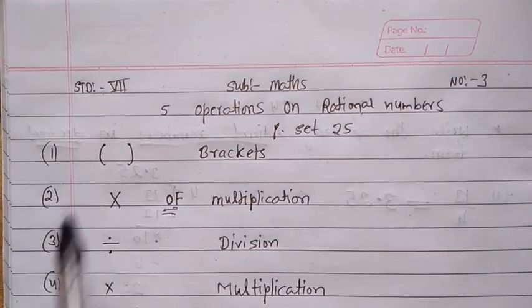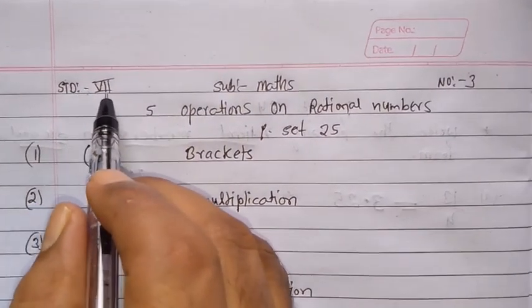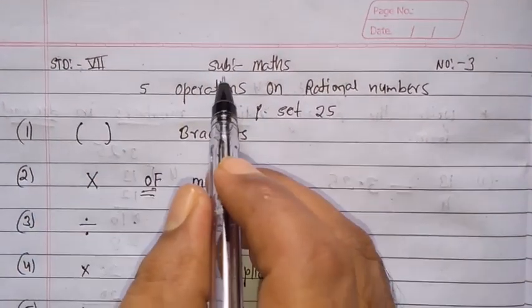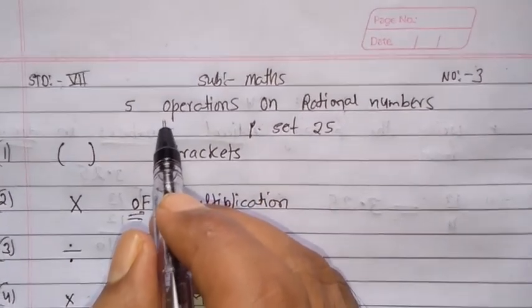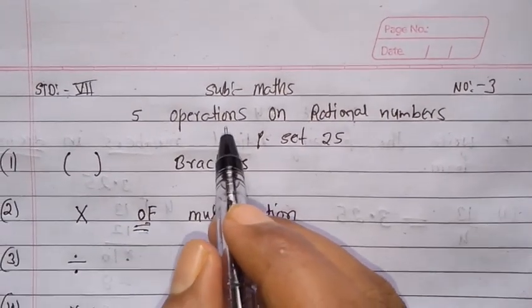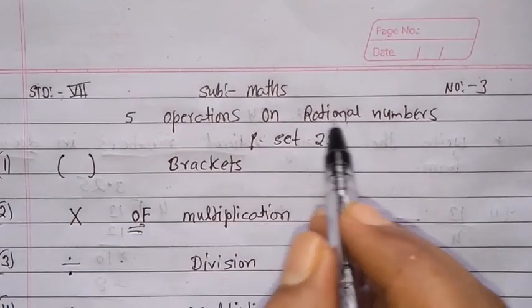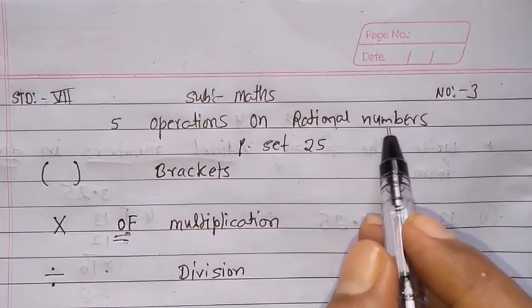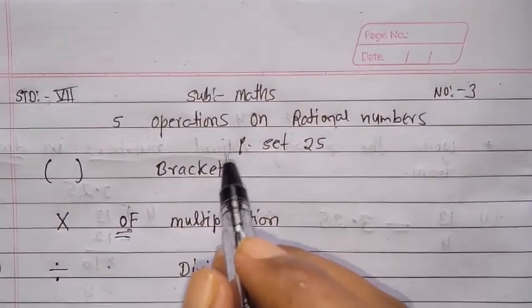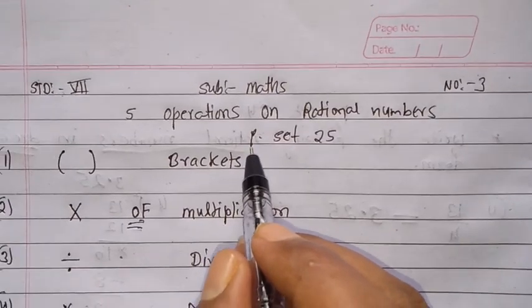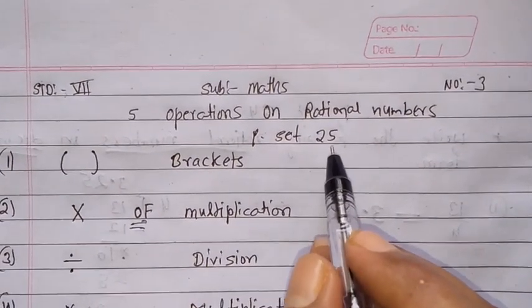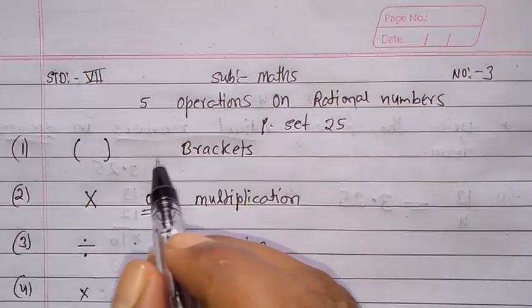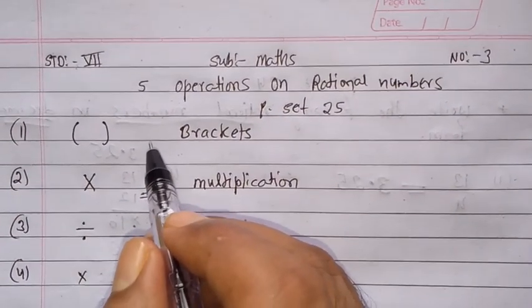Today we are going to learn Standard 7, subject Maths. Our topic is Chapter number 5: Operations on Rational Numbers. Today we are going to learn Practice set number 25.